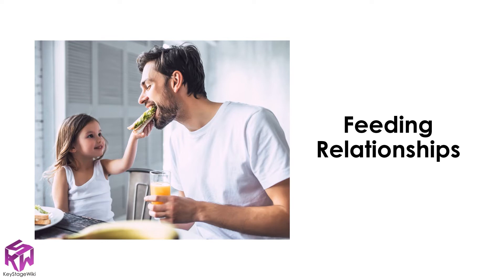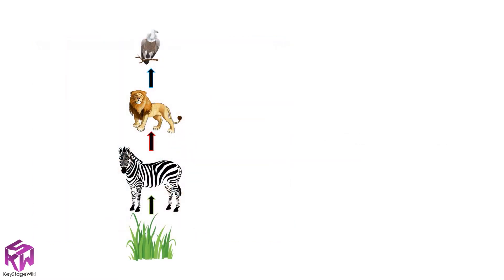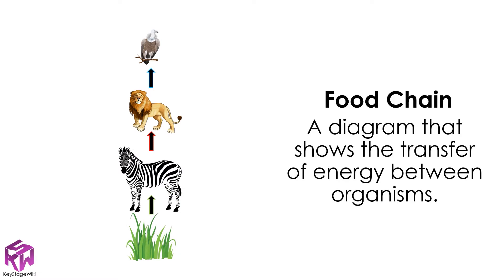Every living thing on earth either provides food for others or depends on other living things for their food, so what happens to one population of organisms affects them all. Scientists represent these feeding relationships with a diagram called a food chain — a diagram that shows the transfer of energy between organisms. In this food chain we can see that zebra rely on grass for food.